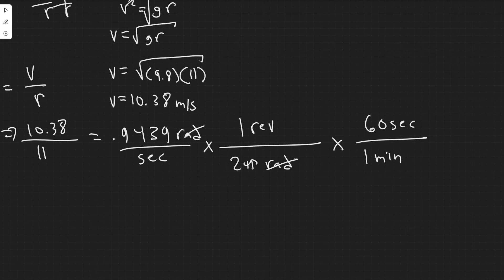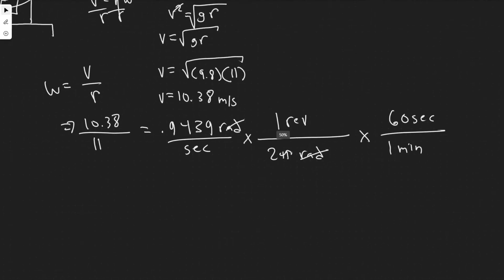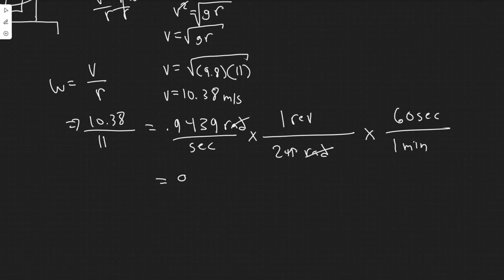So doing this, you'll have 0.9439. You're dividing by two times pi here. And then you would multiply by 60. So you're going to get that it equals 9.01. And then the units are going to be revolutions per minute. So this is going to be your answer.